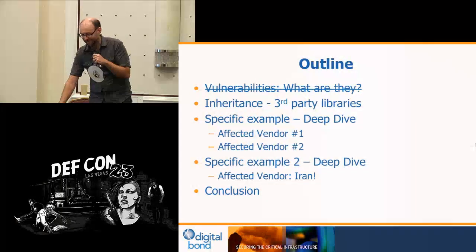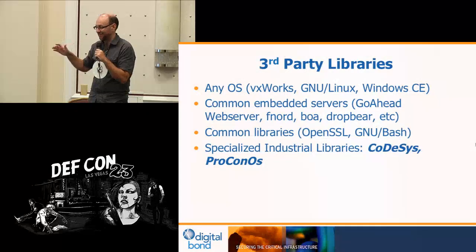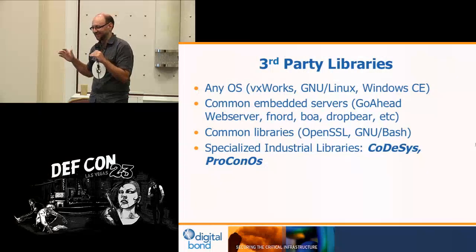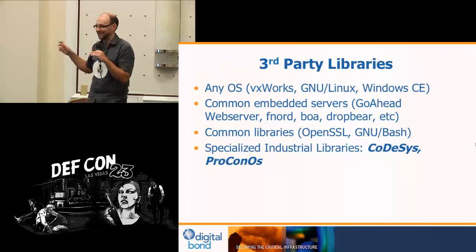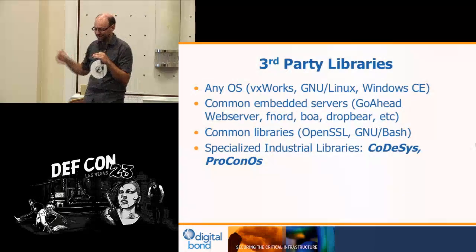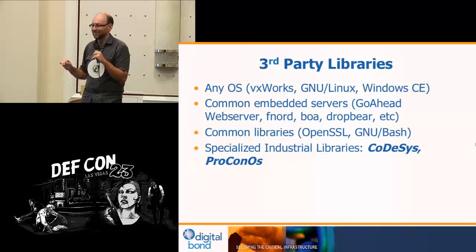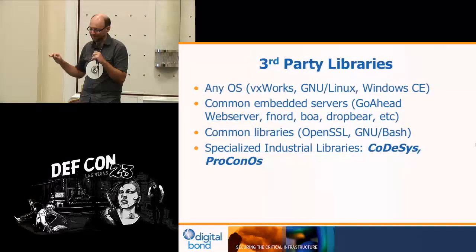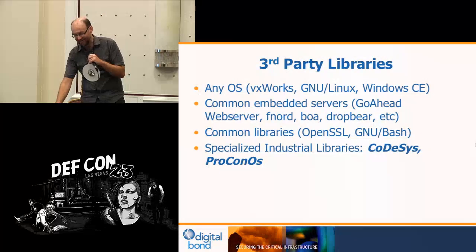Let's look at some cool third-party libraries. What is a third-party library? I specifically focus on embedded systems. Anything that runs on your system is really a third-party library — there are operating systems, common servers that usually live on industrial controllers. I'm looking in particular at industrial ones. Two that I've focused on in the last couple of years are the CodeAssist library and the Proconos library for industrial controllers.